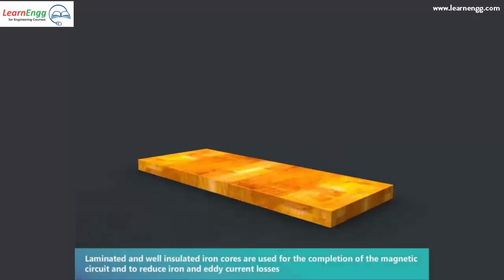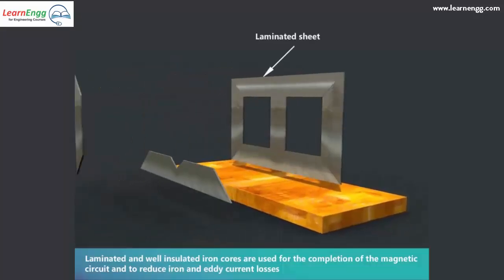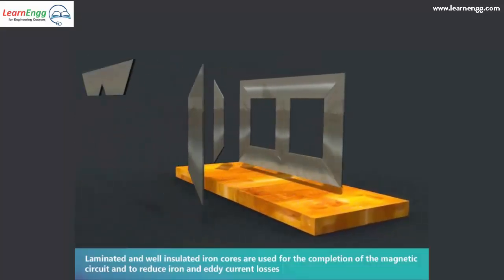Laminated and well insulated iron cores are used for the completion of the magnetic circuit and to reduce iron and eddy current losses.